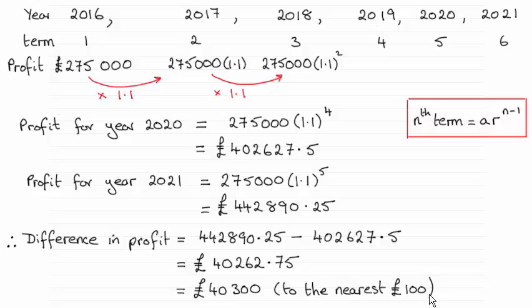So all I've done is I've worked with the nth term of a geometric progression. It's AR to the power n minus 1, which you should be familiar with, and you can see that the common ratio then is 1.1 between each term.